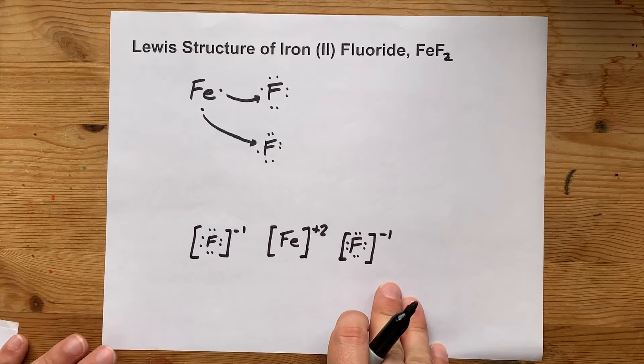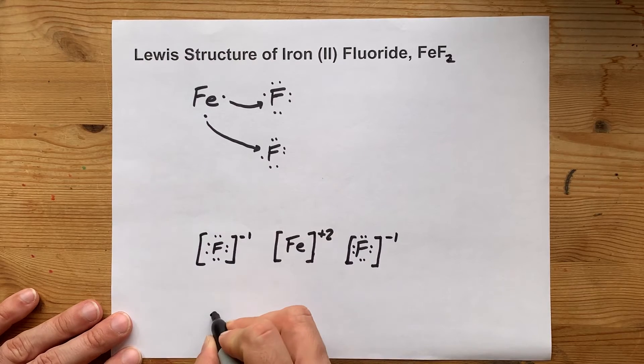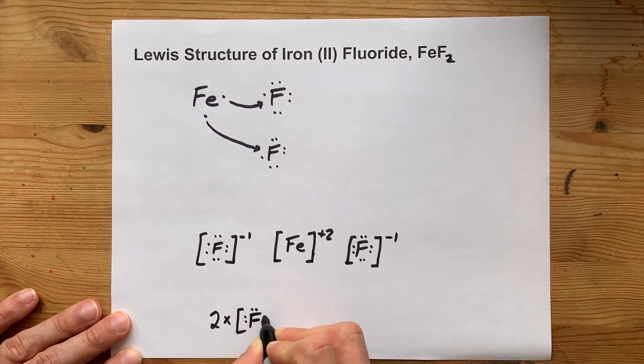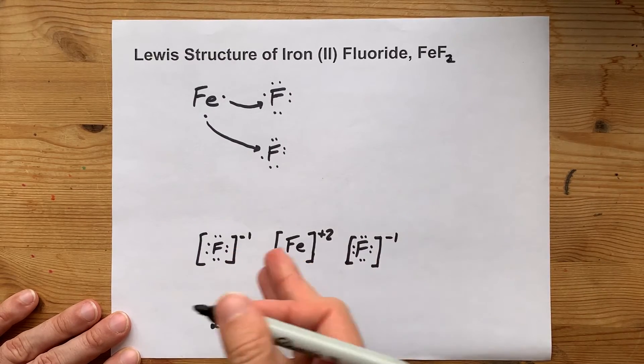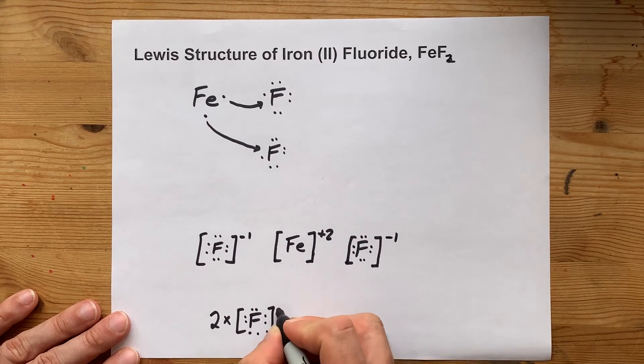And here's your completed Lewis structure for iron to fluoride. Some teachers will allow you to take the shortcut, write 2 times that F. But I like to show that there's an F on either side. It kind of implies that the crystal structure has alternating positive and negative ions.